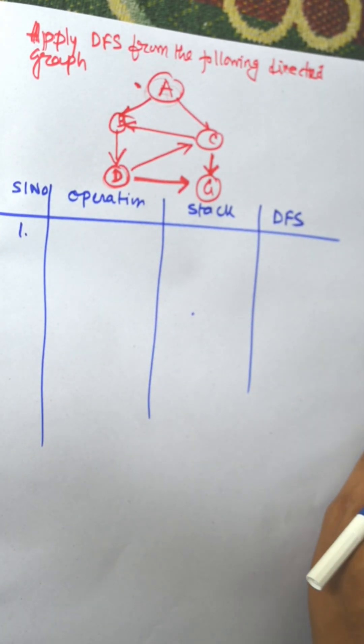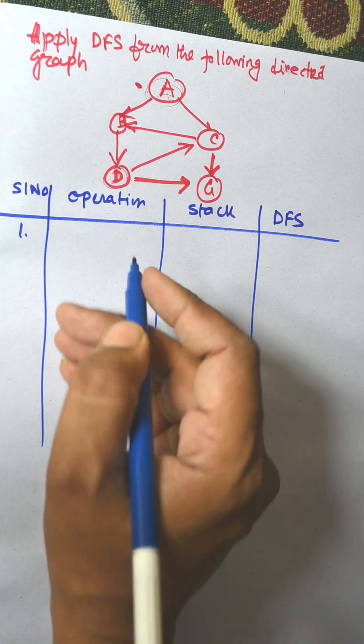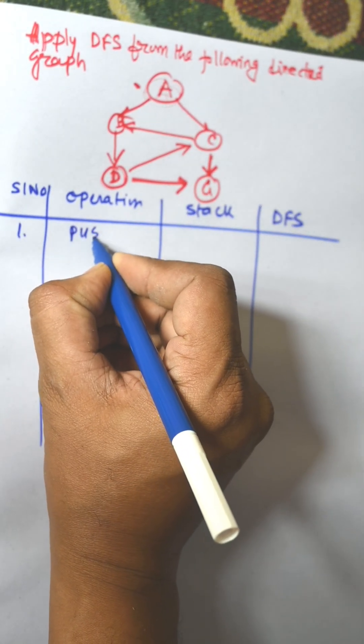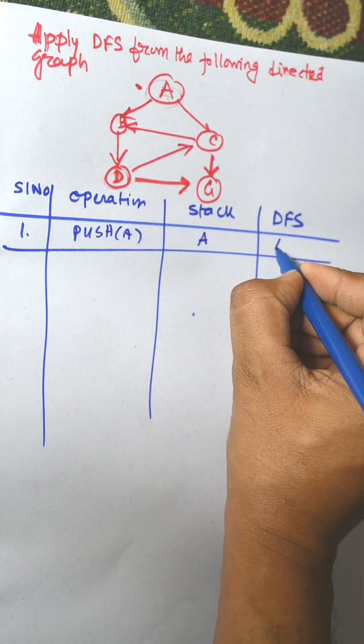Initially we need to visit the first node from the graph, that is the starting node. Here A is considered as the starting node. Push A. First element is inserted into the stack and DFS answer is A.